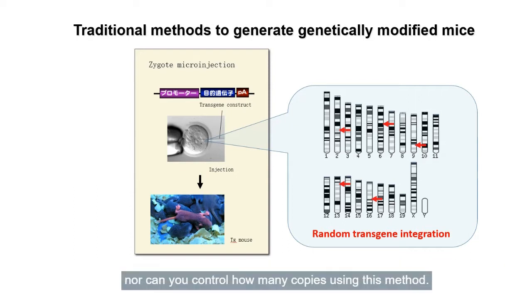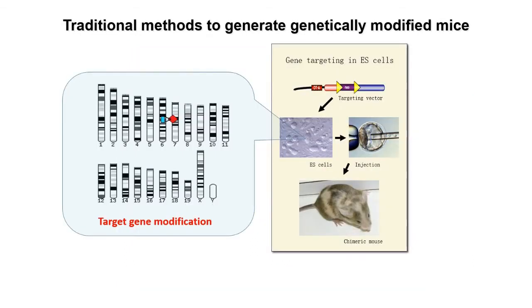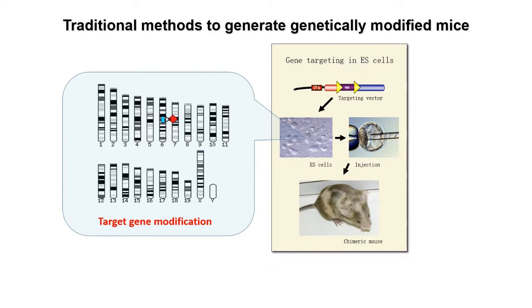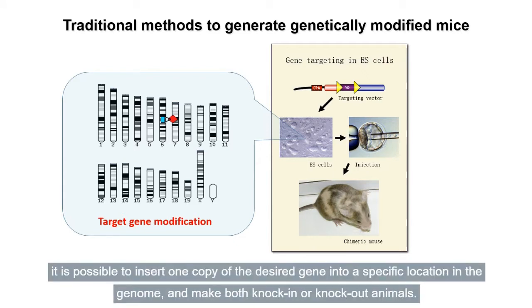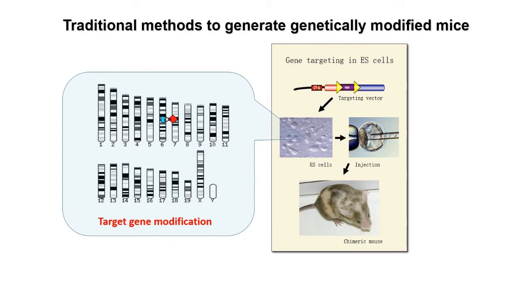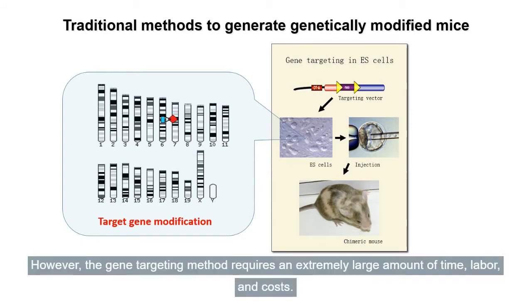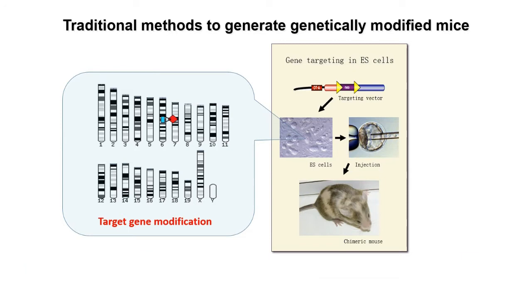Using the ES cell gene targeting method, it is possible to insert one copy of the desired gene into a specific location in the genome and make both knock-in or knock-out animals. However, the gene targeting method requires an extremely large amount of time, labor, and costs. In some cases, it may have taken several years until the target animal was acquired.